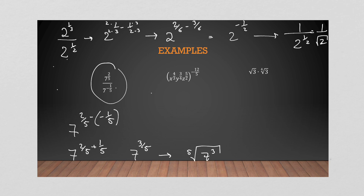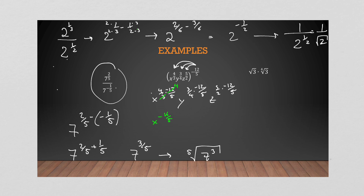For the next example, water bomb the outer exponent in: x^(4/3 × −12/5) × y^(3/4 × −12/5) × z^(5/2 × −12/5). Simplify each: 12 ÷ 3 = 4, so x^(−16/5). For y: 12 ÷ 4 = 3, so y^(−9/5). For z: the fives cancel and −12 ÷ 2 = −6, so z^(−6). Since all exponents are negative: 1 over x^(16/5) y^(9/5) z⁶.